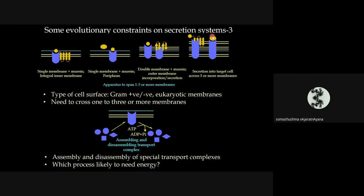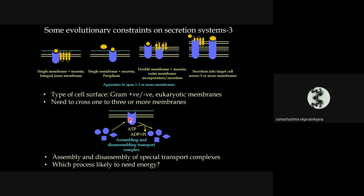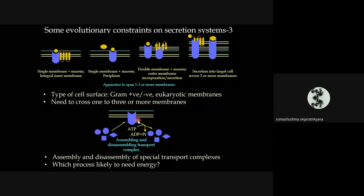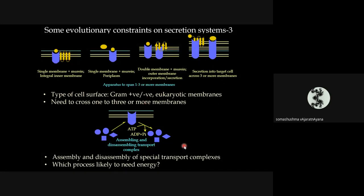If a protein needs to enter a eukaryotic target cell, it must also cross the eukaryotic cell membrane. Another consideration is that transport processes may not be needed all the time — especially for pathogenic or parasitic bacteria, secretion may be required only when inside or attaching to a host. So a subset of secretory systems are facultative, raising the question of assembly and disassembly — and which process is more likely to require energy.